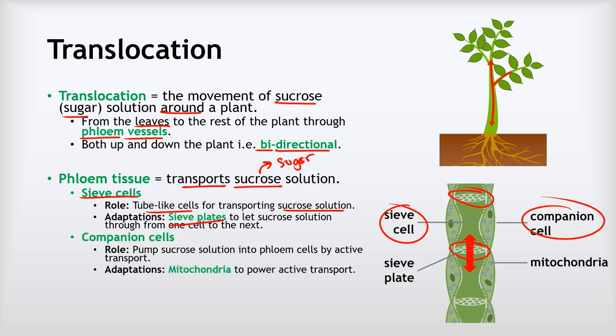The other kind of cell is the companion cell - these cells sit next to the sieve cells. Their job is to pump sucrose solution into the phloem cells by active transport. Because the concentration of sucrose in the sieve cells is very high, we need active transport to get the sucrose in there - with just diffusion, the sucrose would actually leave the sieve cells, and that's not what we want. We want as much sucrose in them as possible so it can get to the rest of the plant. Therefore, companion cells have lots and lots of mitochondria to provide the energy for the active transport.